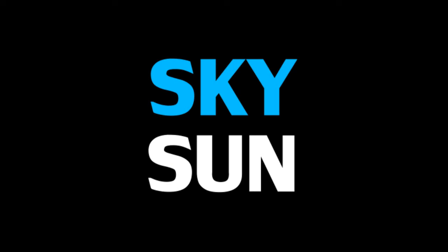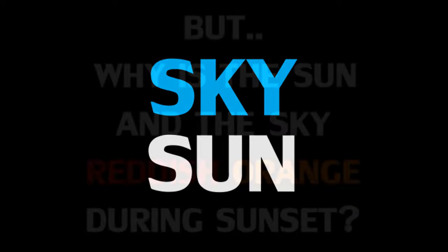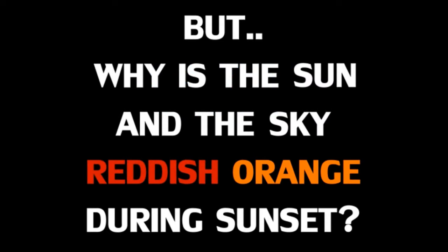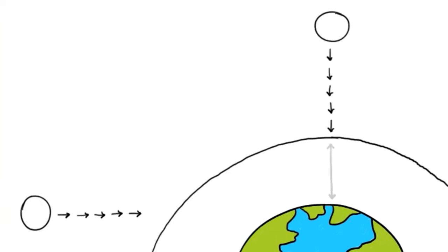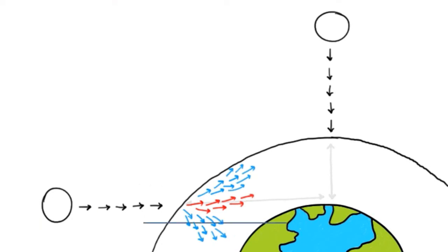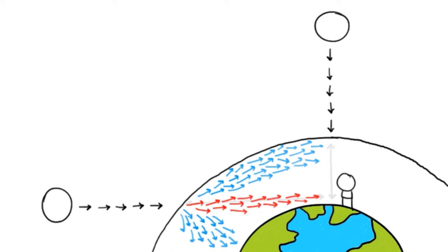Okay, so we know that the sky is blue and the sun is white. But why is the sun and the sky reddish-orange during sunset? Well, at sunset, the sun is a lot lower in the sky. And the sunlight has to travel through a lot more atmosphere to reach your eye, which means blue light has a lot more time to scatter all around. And what remains is the red light, which reaches our eye.